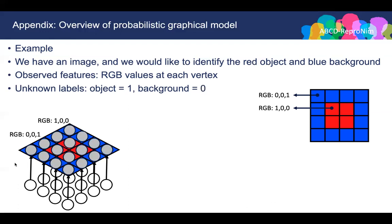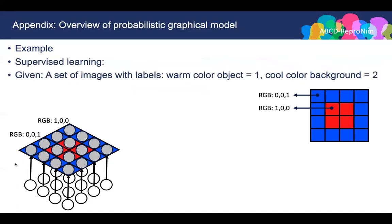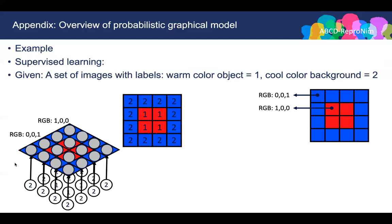We can construct a graph for all 16 pixels. In this case, we can formulate this example as a supervised learning problem. Assume we have a set of images which are labeled already, so the warm color pixel is labeled as 1 and the cool color pixel is labeled as 2. We can see the red pixels are all labeled as 1 and the blue pixels are all labeled as 2.